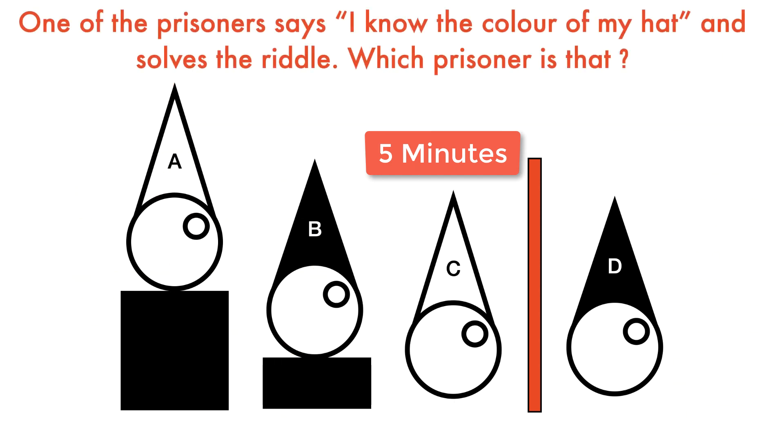Remember, if just one of them gets the answer wrong, they will all have their sentences doubled. One of the prisoners says, I know the color of my hat, and solves the riddle. Which prisoner is that? Can you solve this riddle? Feel free to pause the video and give it a try before checking the solution.